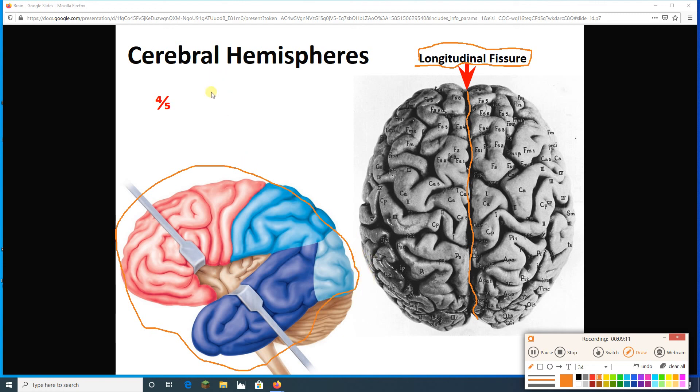Now, overall, the two hemispheres make up four-fifths. In other words, 80% of your brain. This is obviously the majority. These are big, important parts of our brain. All right.